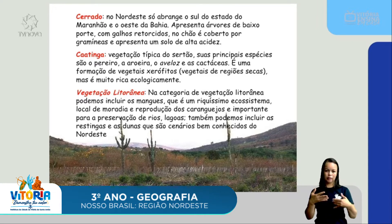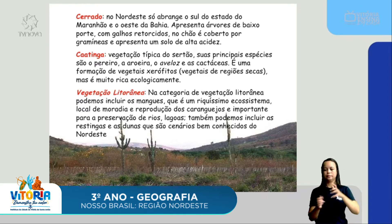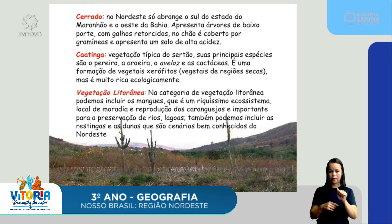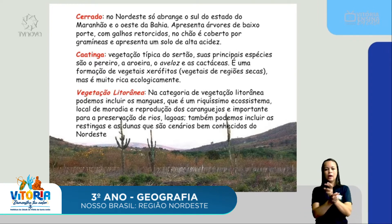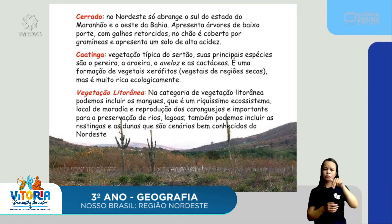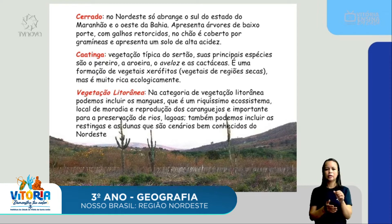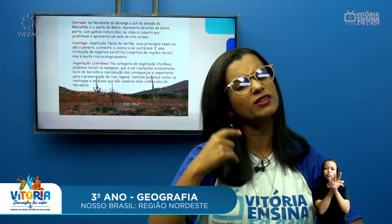A caatinga é a vegetação típica do sertão. Suas principais espécies são o pereiro, a arueira, o avelós e as cactáceas, ou seja, os cactos. A vegetação litorânea inclui os mangues, que são riquíssimos em ecossistema — tem muita vida ali no mangue. Local de moradia e reprodução dos caranguejos, importante para a preservação de rios e lagoas. Também podemos incluir as restingas e as dunas, que são cenários bem conhecidos do Nordeste. Lá no Maranhão a gente tem dunas lindíssimas — são aqueles montes de areia perto do mar que, quando dá aquele vento, parecem que estão se movimentando. O nosso Nordeste é muito lindo.